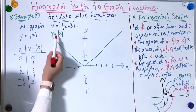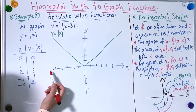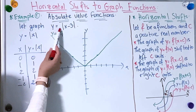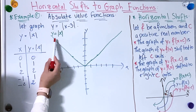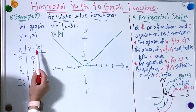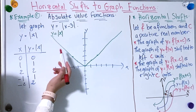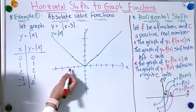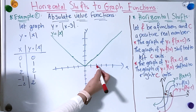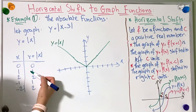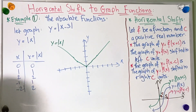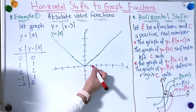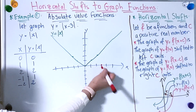Now we're going to graph y = |x − 3|. As I mentioned, the graph of y = f(x − c) is the graph of y = f(x) shifted to the right c units, which is 3. So I'm going to take the graph and move it to the right 3 units using the points I already have. The first point is 0, so I'm going to shift it 1, 2, 3.